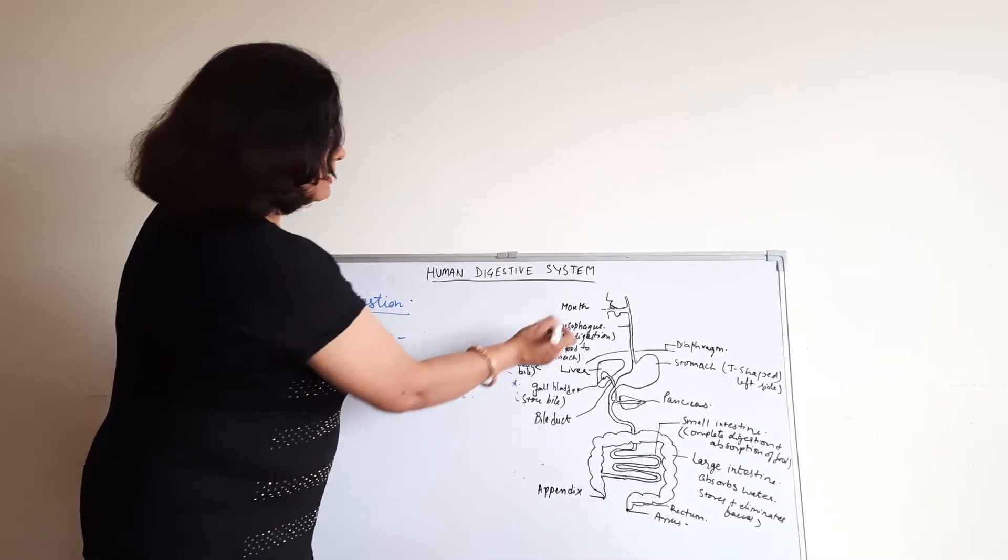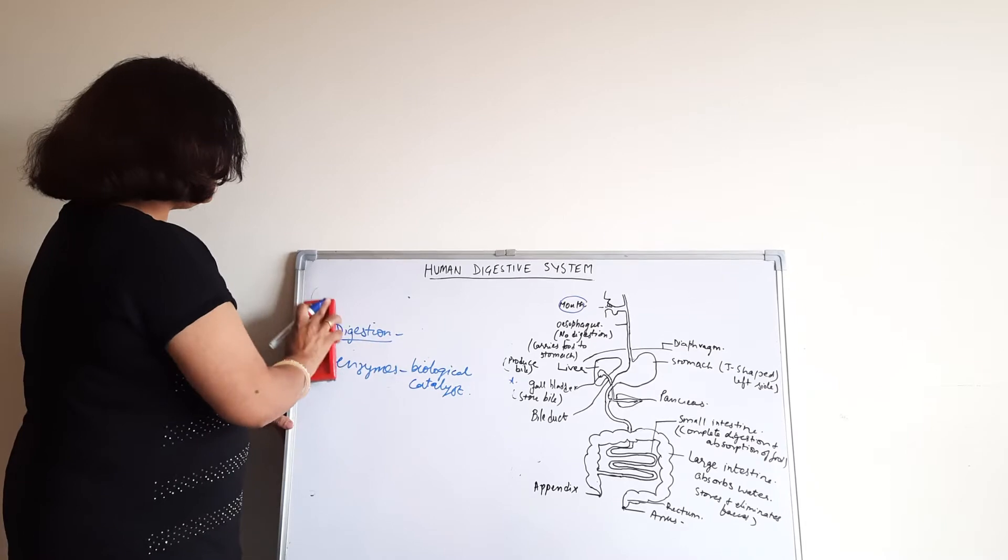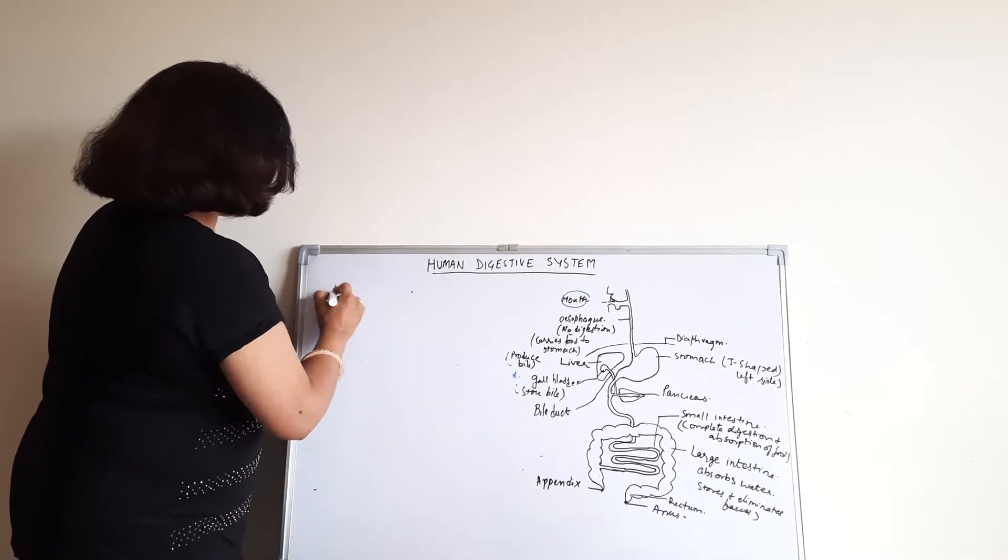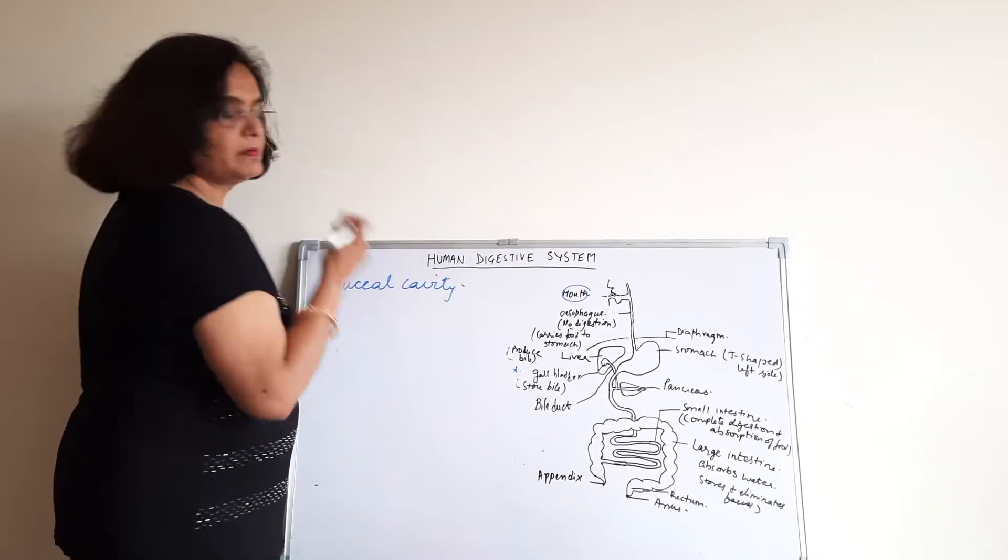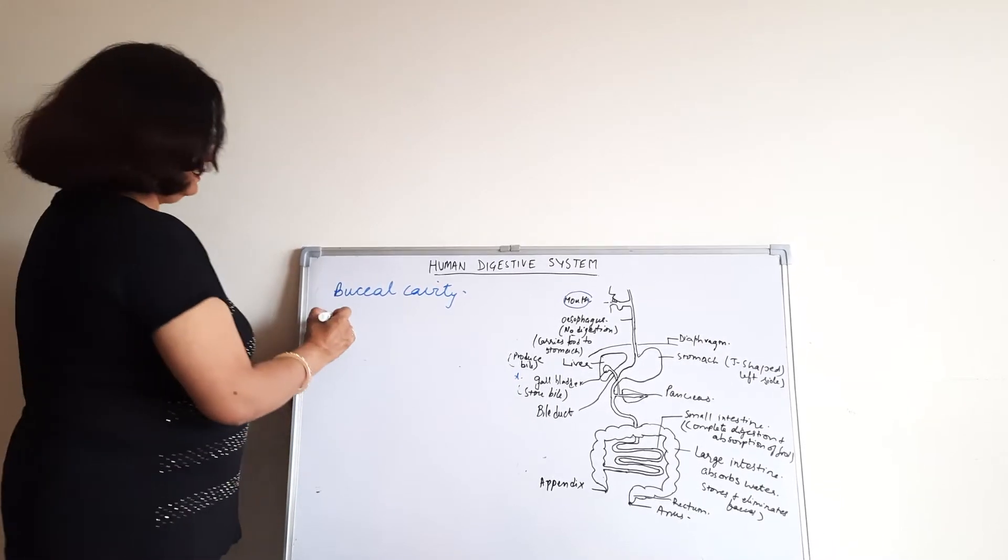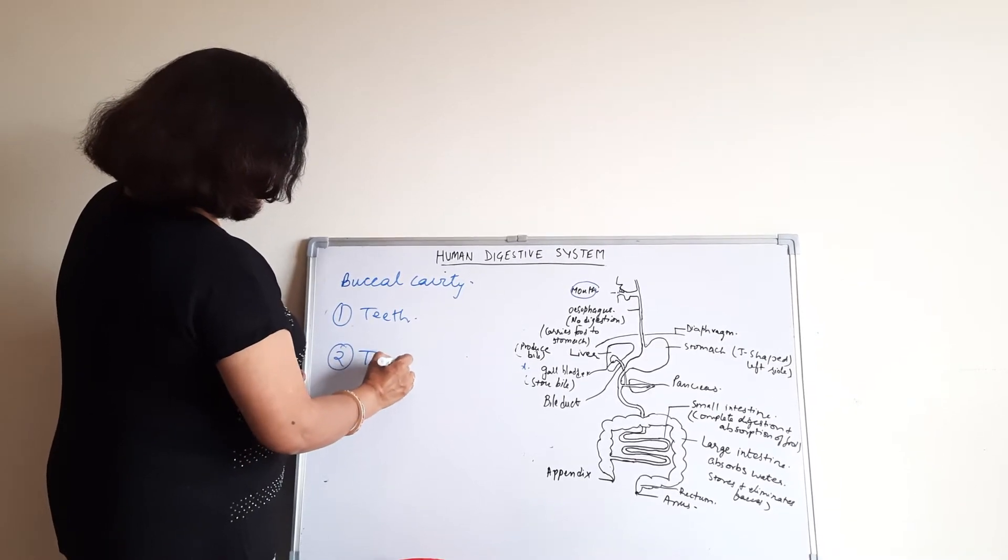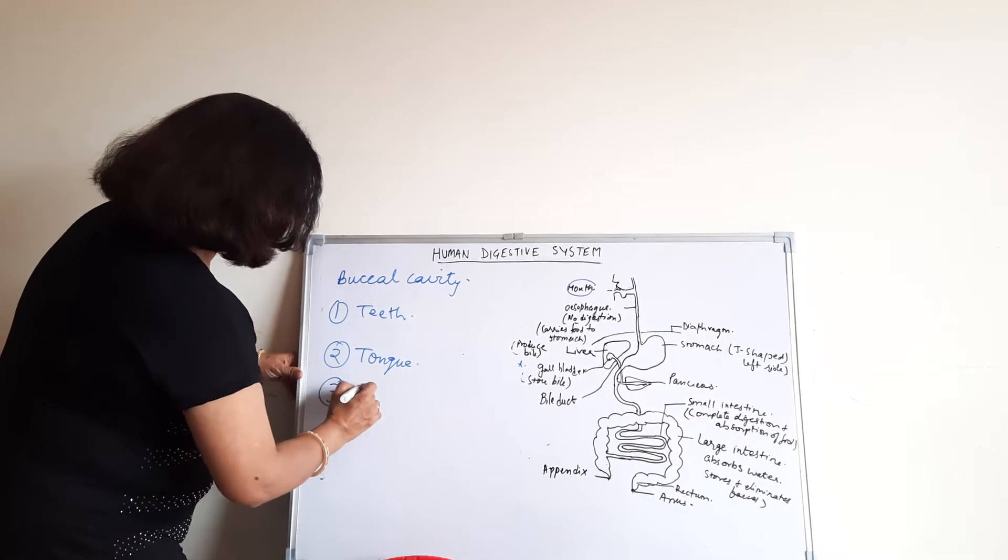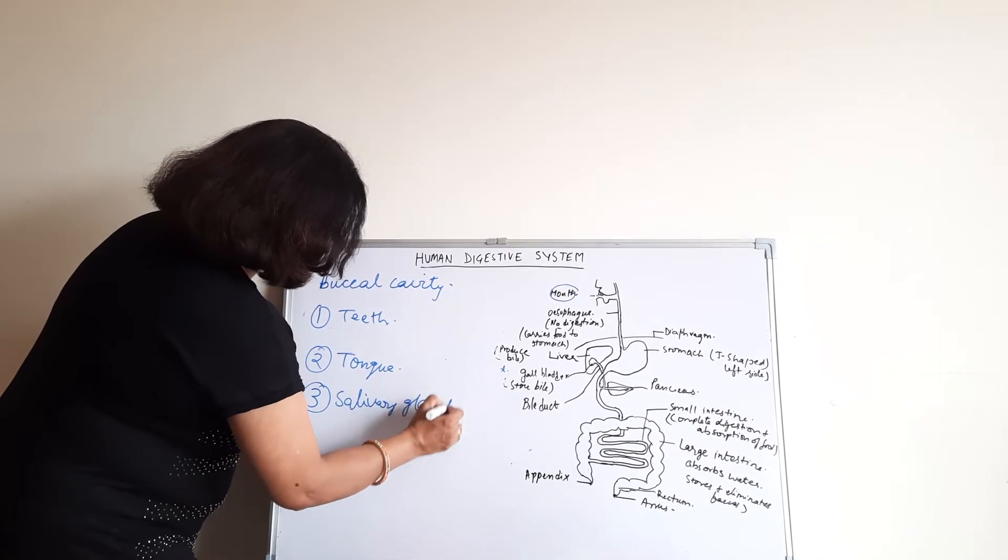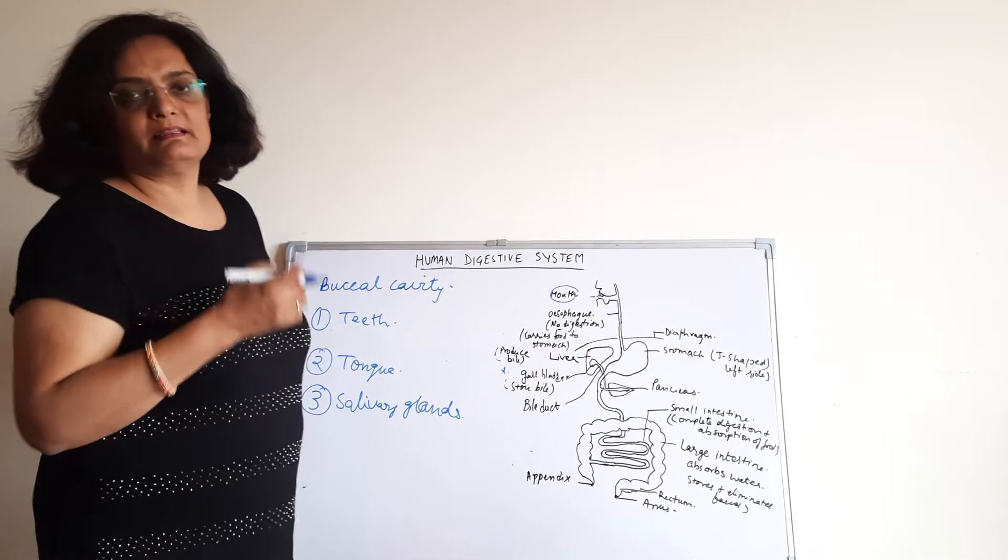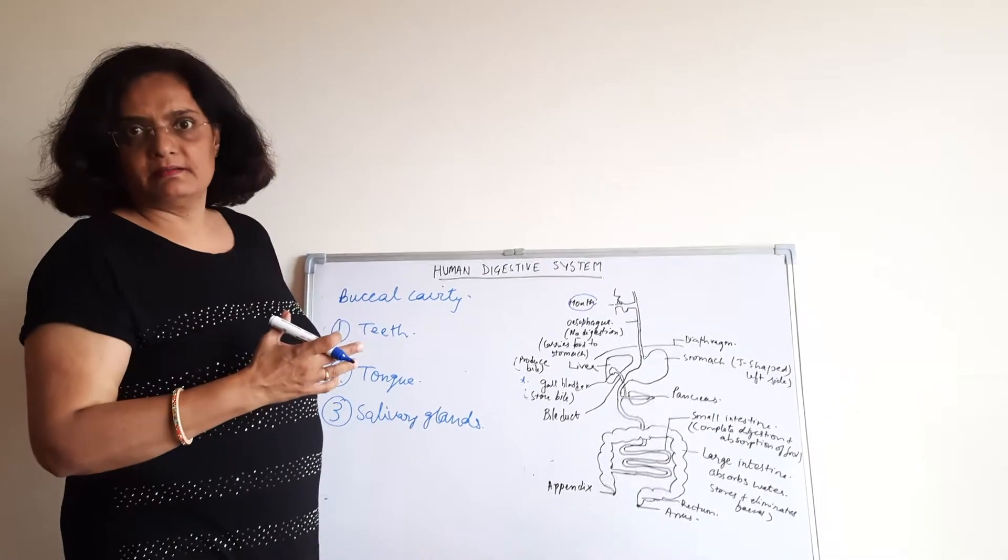Now in the mouth, mouth is called buccal cavity. This buccal cavity can be divided into three parts. Teeth, tongue and salivary glands. Teeth cut the food, they chew it and they grind it.